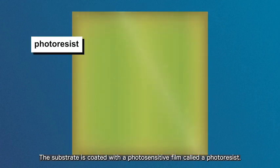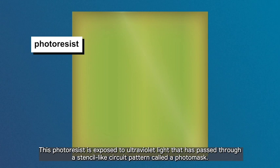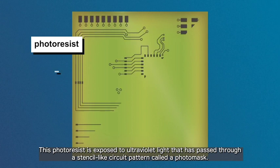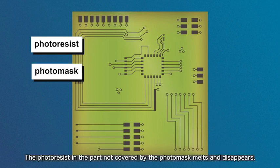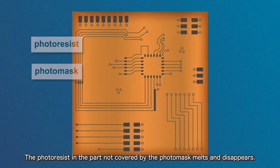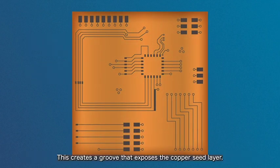The substrate is coated with a photosensitive film called a photoresist. This photoresist is exposed to ultraviolet light that has passed through a stencil-like circuit pattern called a photomask. The photoresist in the part not covered by the photomask melts and disappears. This creates a groove that exposes the copper seed layer.